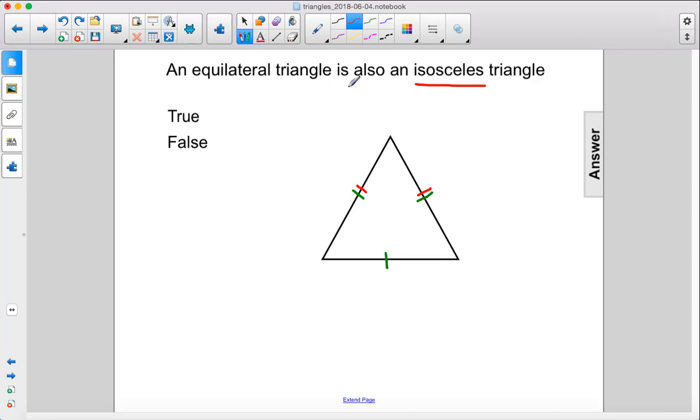All equilateral triangles are isosceles triangles, but not all isosceles triangles are equilateral triangles. In this case, this is true, and that is our answer.